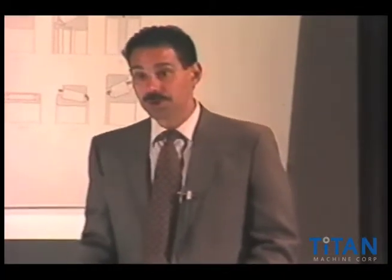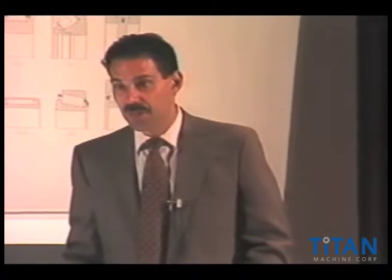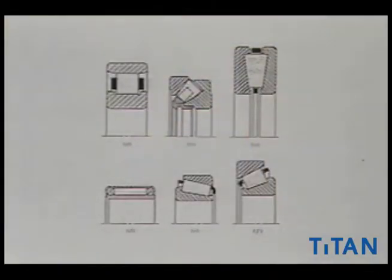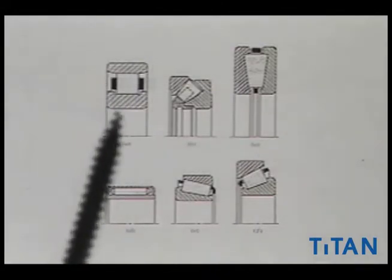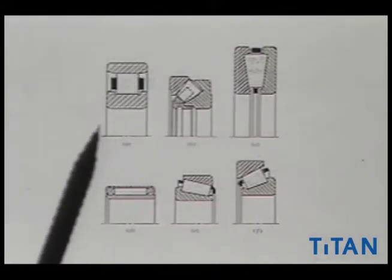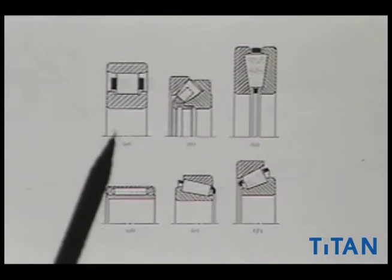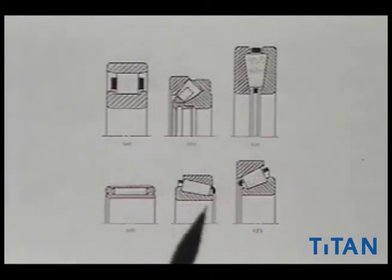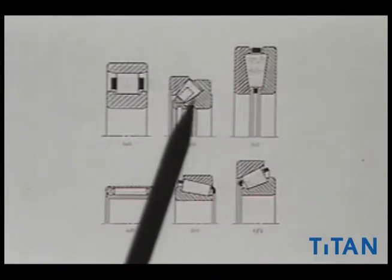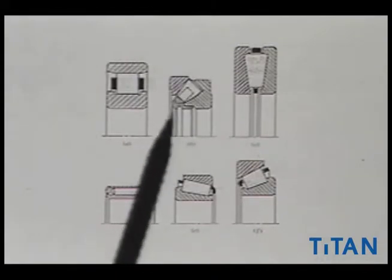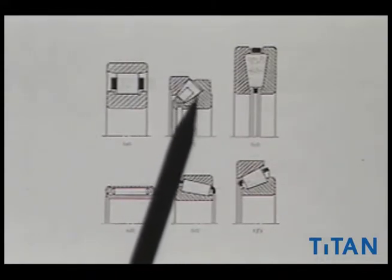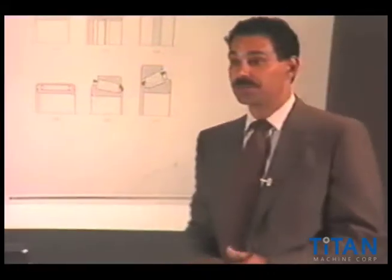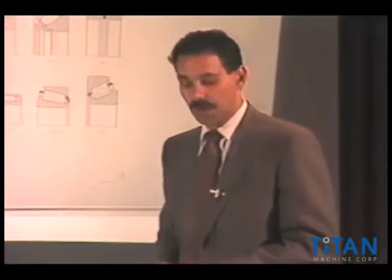Another very common bearing for two-to-one sheaves and heavy duty applications would be a straight roller bearing. You might see this on counterweight sheaves, car sheaves, freight machines — that straight roller. Next is the taper roller bearing — this is a cross-sectional view. Another style is the spherical bearing, which is a very nice bearing. It's more expensive, but it allows a certain amount of misalignment and will align itself.